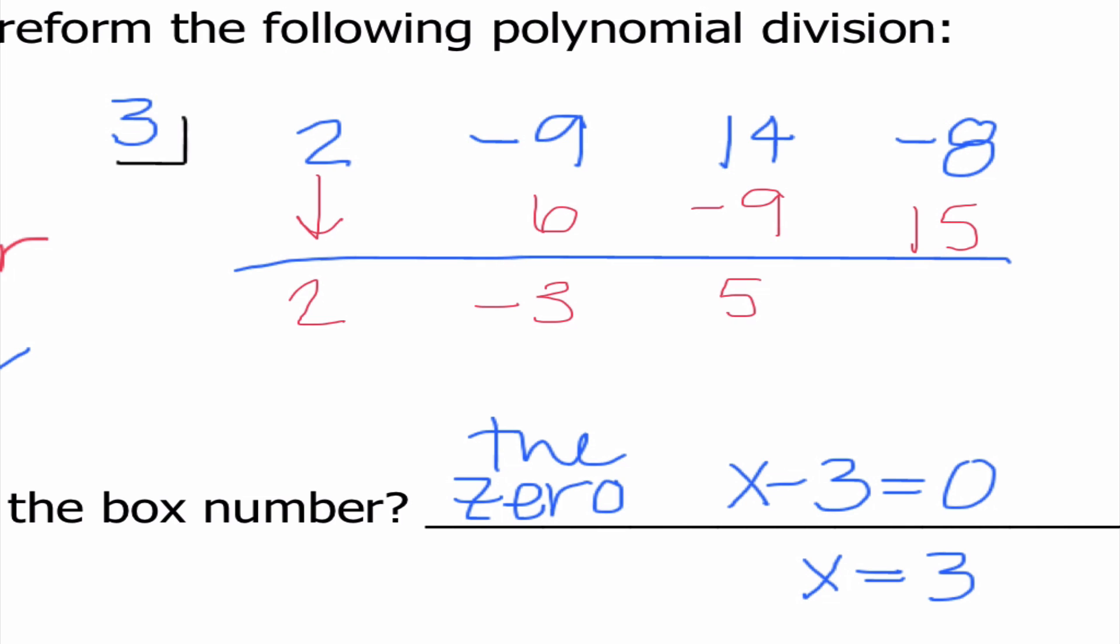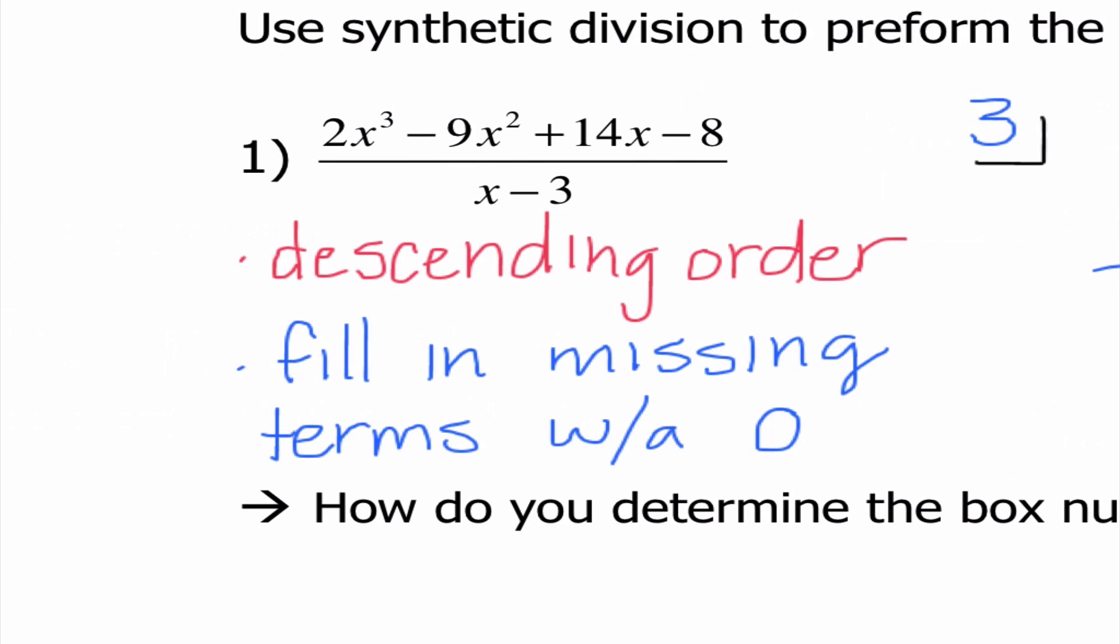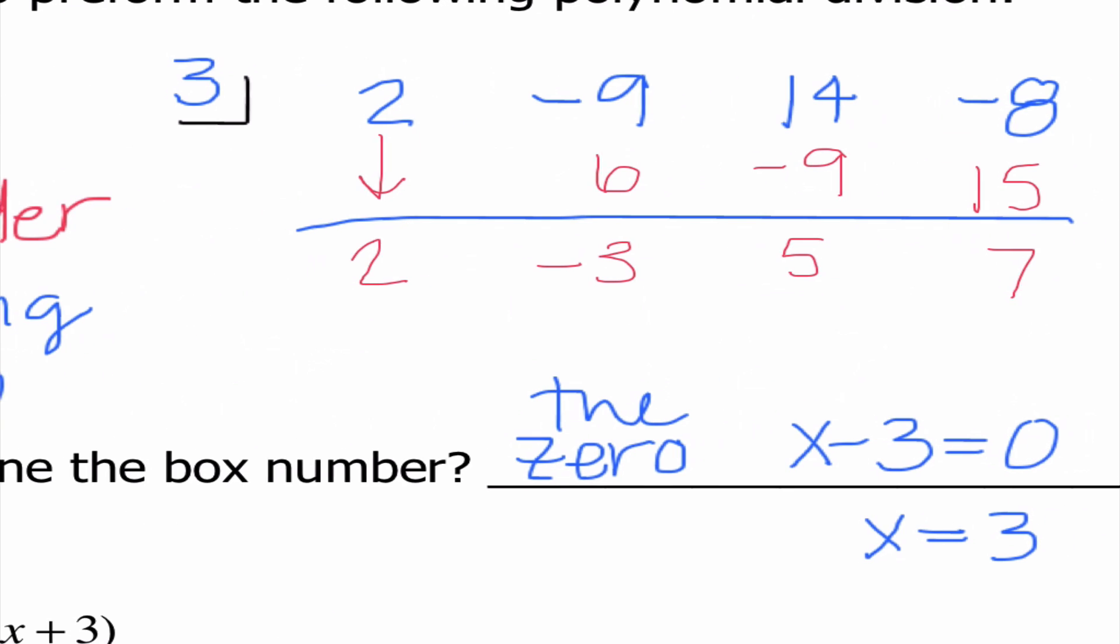5 times 3 is 15. Negative 8 plus 15 is 7. And so when I'm writing this, we always start 1 degree lower than my original polynomial. If I look, my original polynomial here was x cubed. So that means my very first term here is going to be x squared. And then I'm going to continue down. So I have 2x squared minus 3x plus 5. And 7 is our remainder.